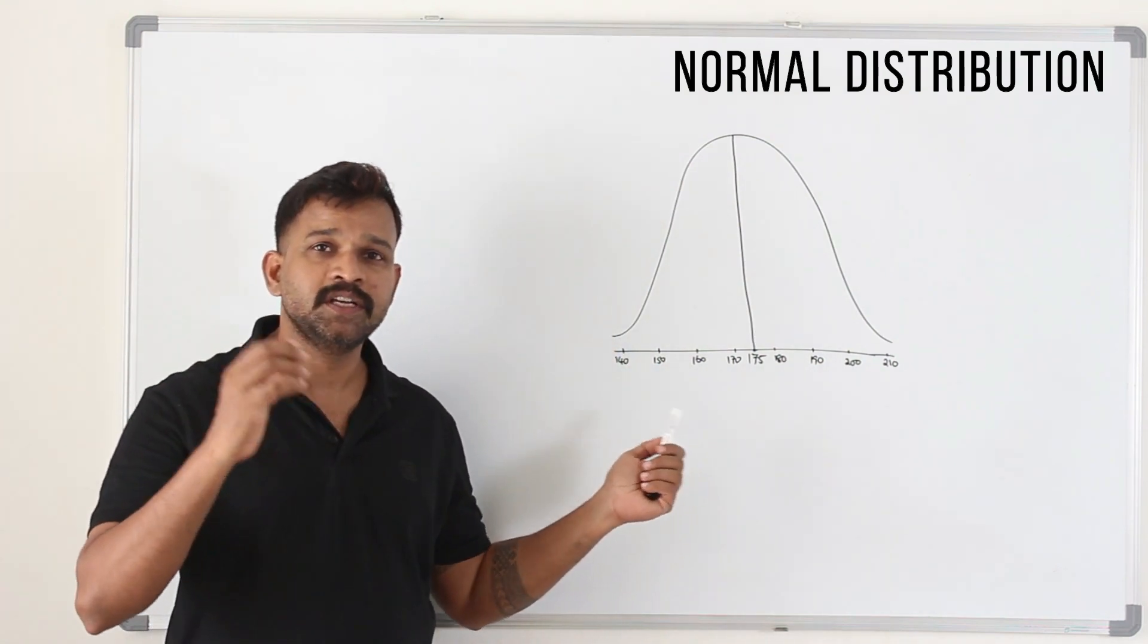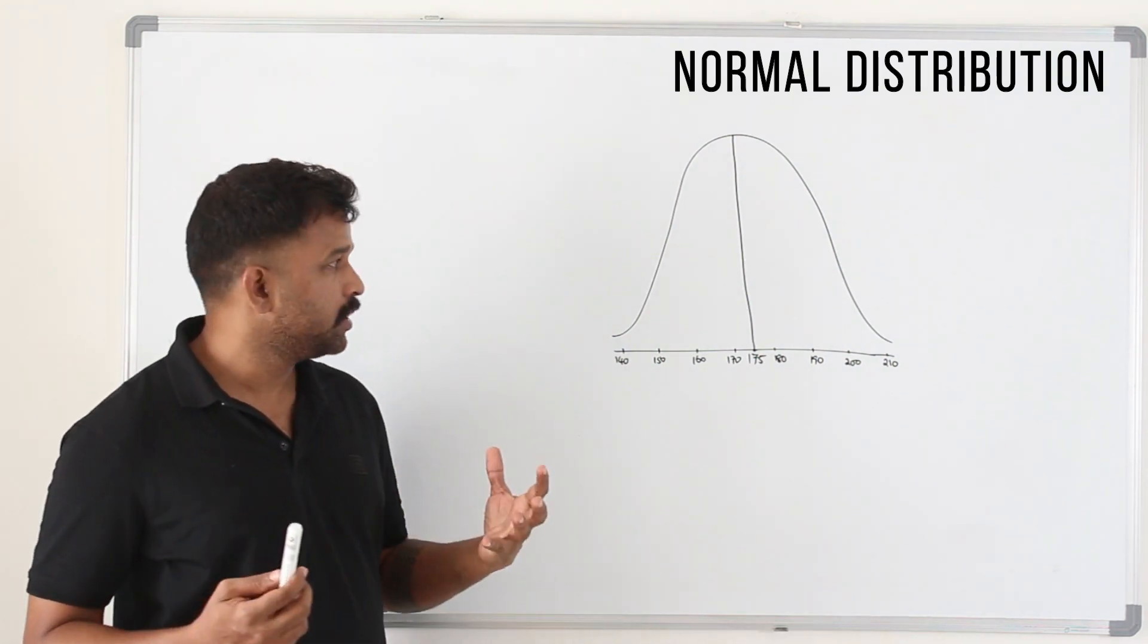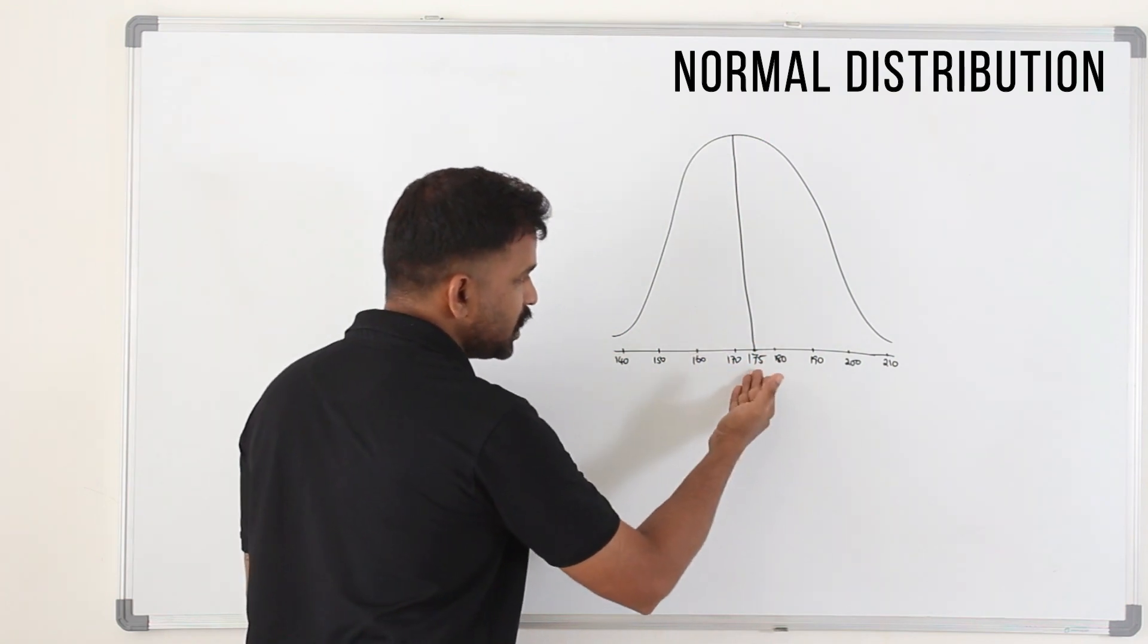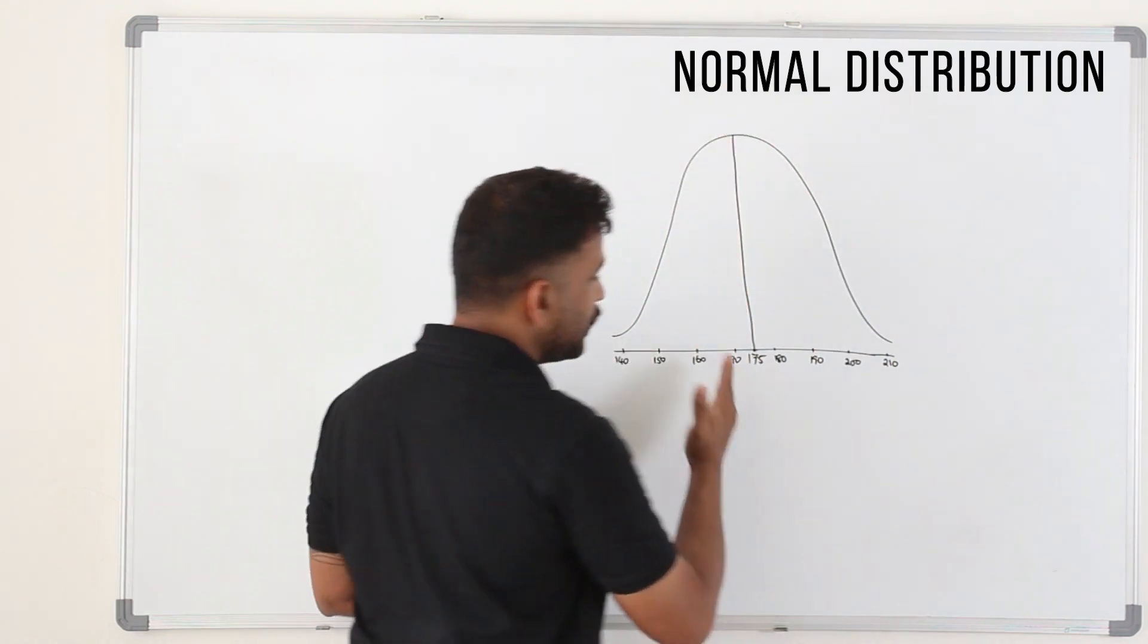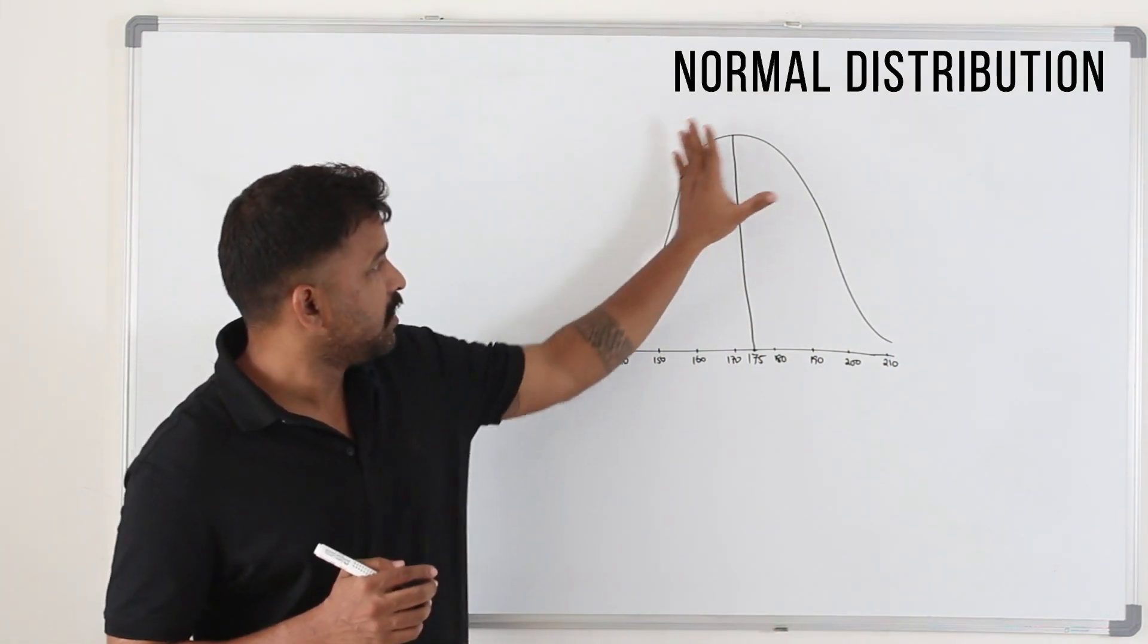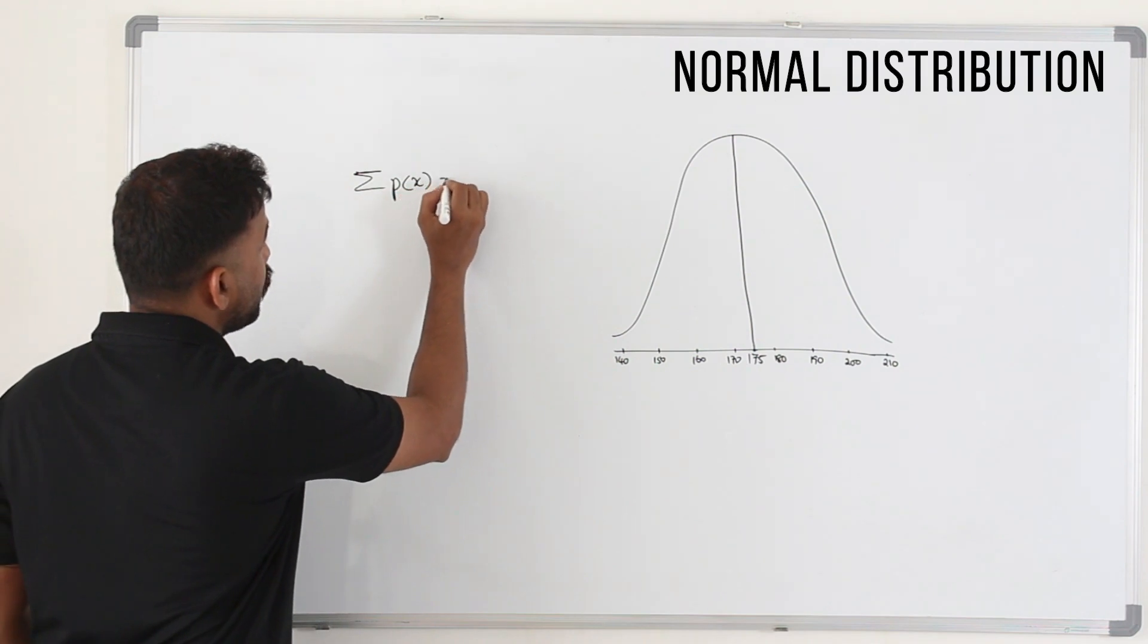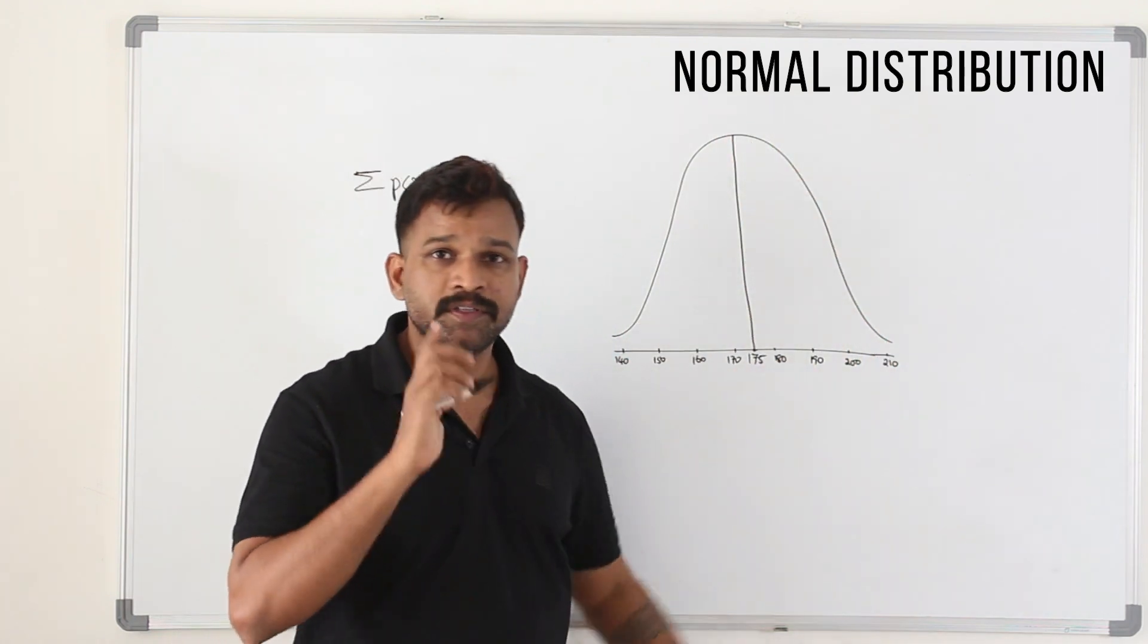Now we'll learn a few characteristics about this bell curve. The bell curve has a mean here. Let's say for this data, mean is 175. The curve is always symmetrical about the middle line mean. The curve is symmetrical about the mean. The next thing is the area under the curve is 1. In discrete random variable, we learned the sum of probabilities is always 1. When you add all the probabilities, you get 1. Here the area under the curve equals 1.